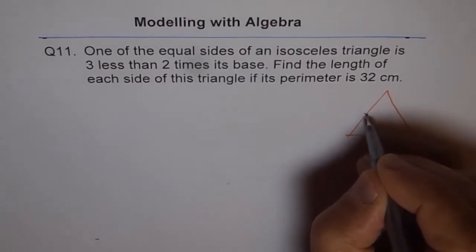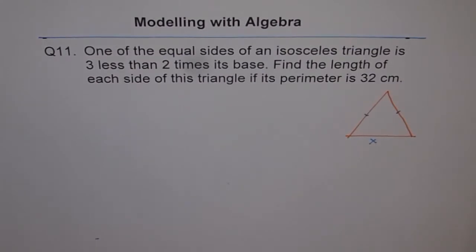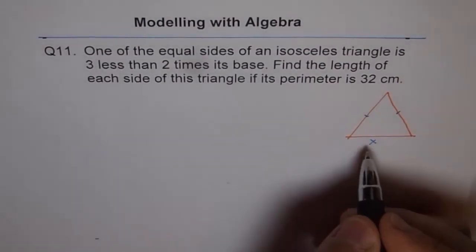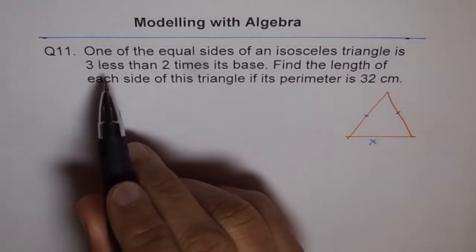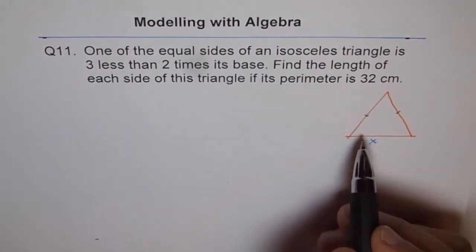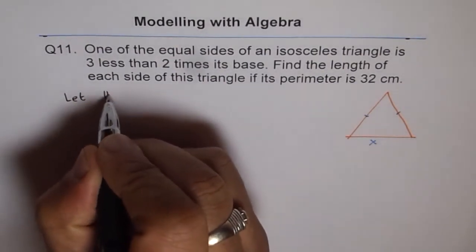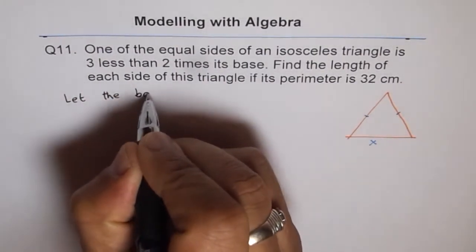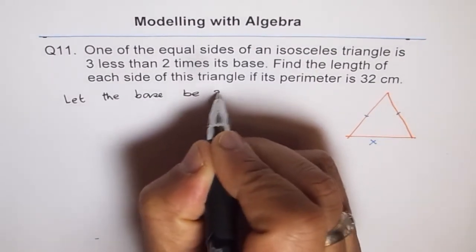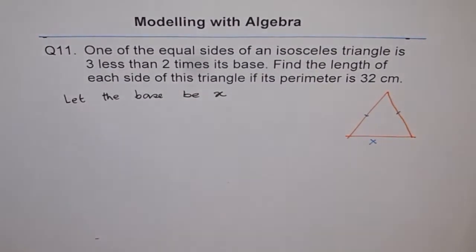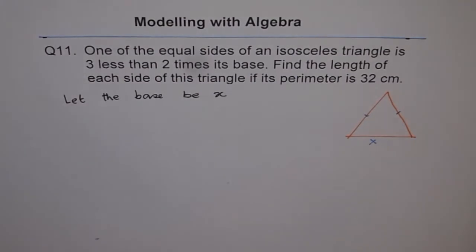And these are my two equal sides. So let's define our variables. In modeling what we do is normally we can sketch, that is the first step. Then we should define all our variables. Here the variable is base, because we are trying to write equations in terms of base. So let the base be x. This let statement is a must to declare all your variables.